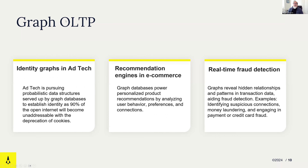OLTP graphs are something close to our heart here at Aerospike — graph databases that can handle punishing transactional environments with lots of reads, writes, and updates. We have a strong heritage in ad tech, and companies are facing the loss of deterministic data from browser cookies. Graph databases and identity graphs are one way these companies are establishing and resolving identity. There are also recommendation engines and real-time fraud detection, where a fraudulent transaction must be resolved in milliseconds rather than seconds.